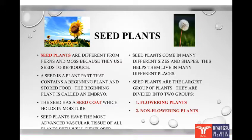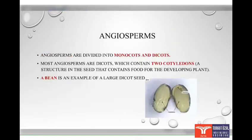Seed plants come in many different sizes and shapes. This helps them live in many different places. Seed plants are the largest group of plants. They are divided into two groups: flowering plants and non-flowering plants. Flowering plants are also known as angiosperms.